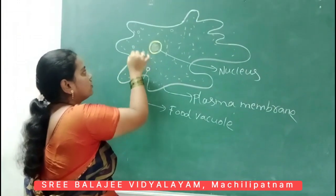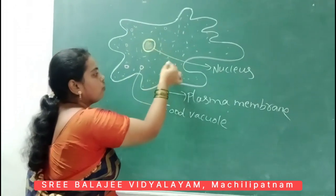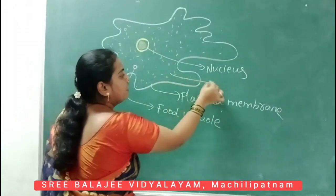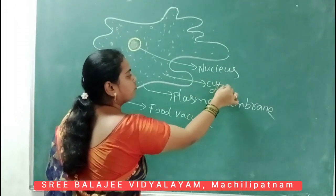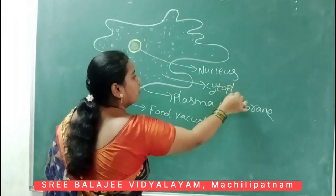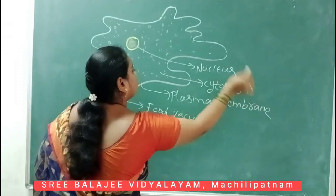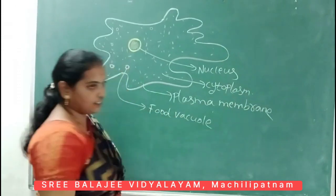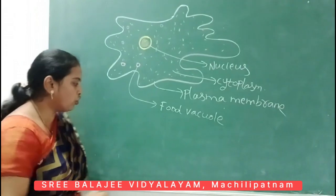This is the water — these dots, these structures, you can call it as cytoplasm. Cytoplasm — how it looks — it is a jelly-like structure.